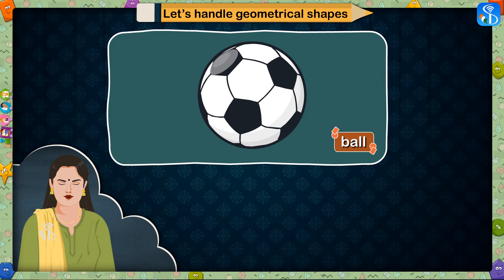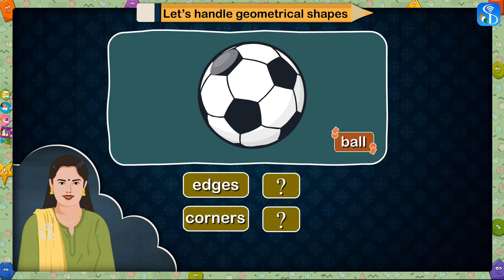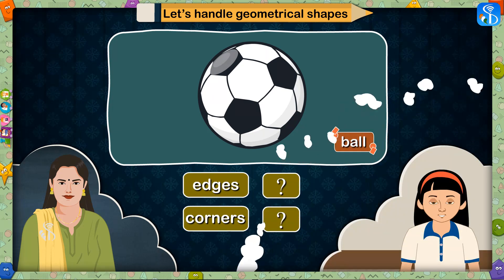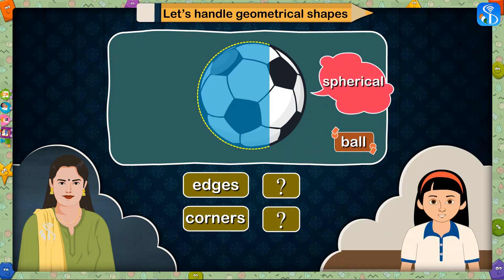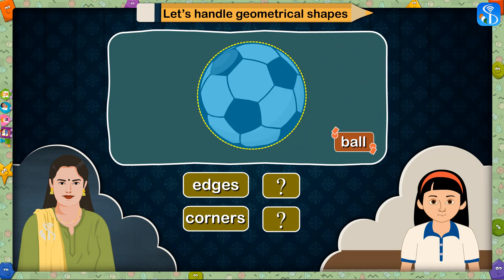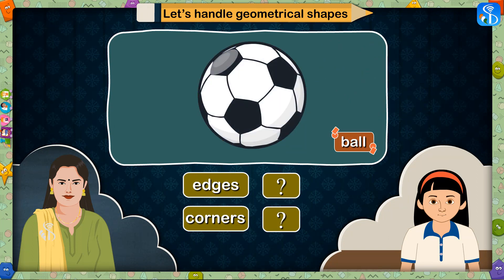This is a ball. What shape does it have? How many edges and corners does it have? The ball is spherical in shape. It has no corners and no edges. Correct! So we will write zero edges and zero corners against the fourth shape in this chart.